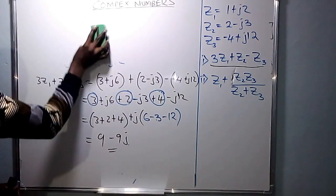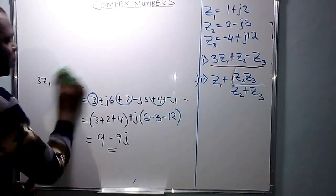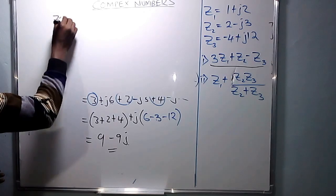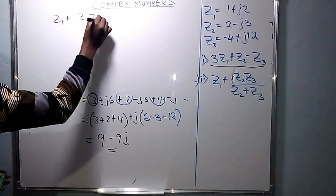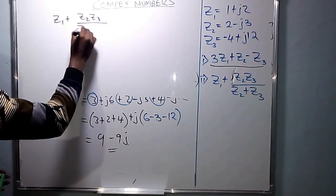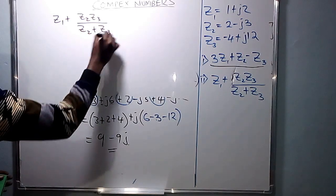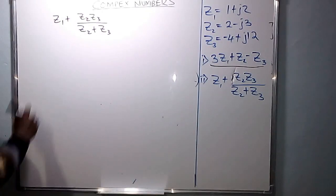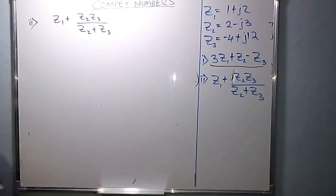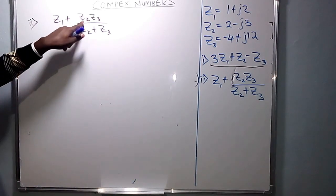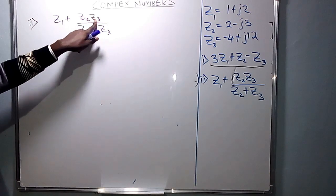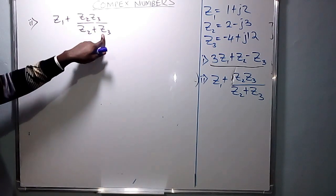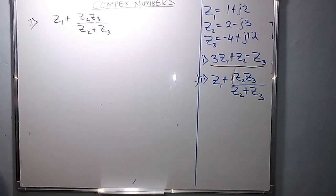Now moving to Roman numeral 2. Following the same procedure, we have to work each term until it is in the form X plus jY. In Roman numeral 2 we are told to determine Z1 plus Z2·Z3 over Z2 plus Z3.